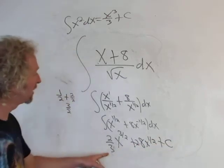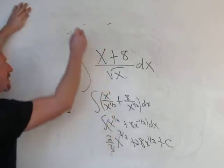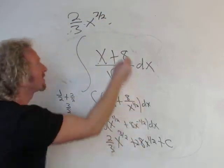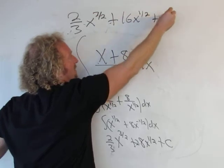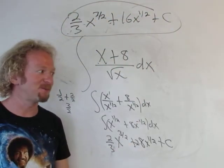And the final answer, I guess would be - I'll write it up here - it would be 2/3 x to the 3/2, and then 16x to the 1/2, and then plus c. And that would be it. Two times eight is sixteen. I hope that made some sense.